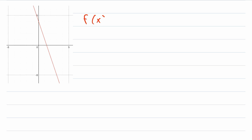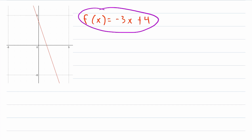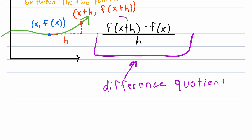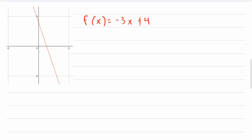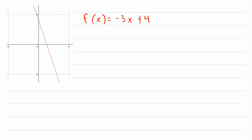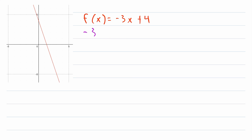Here we've got a graph of a function in red. This function happens to be negative 3x plus 4. Let's find the difference quotient of this function. Remember, the difference quotient is f of x plus h minus f of x over h. Let's work with the numerator first, since we know we'll divide by h at the end. First, we have f of x plus h — that's this function evaluated at x plus h. So where there is an x, we'll put x plus h. That means we're going to have negative 3 multiplied by x plus h, plus 4. This is our f of x plus h.